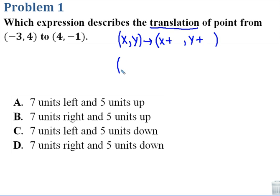So if I start off with negative 3, 4, that's going to map to negative 3 plus something, and 4 plus something. And we need to figure out the something that turns this into 4, negative 1.